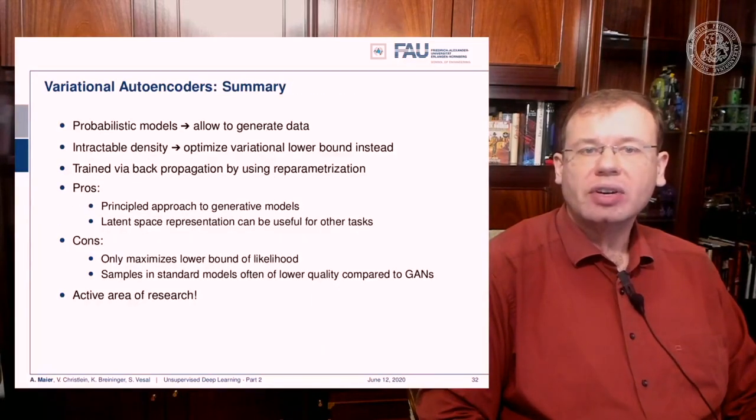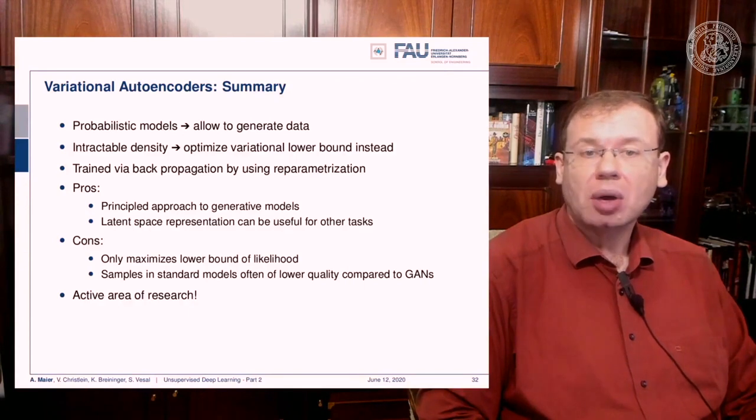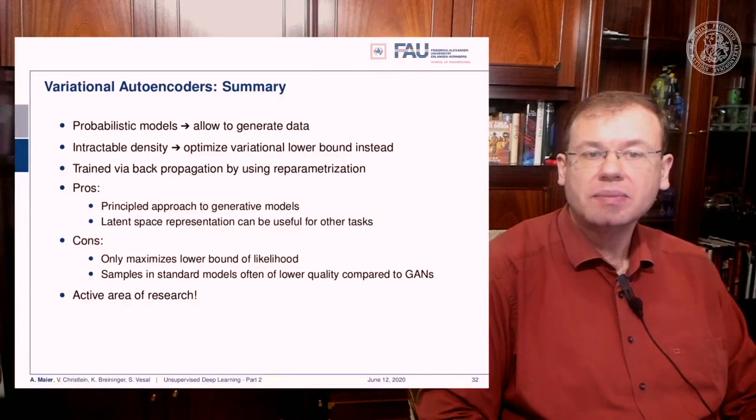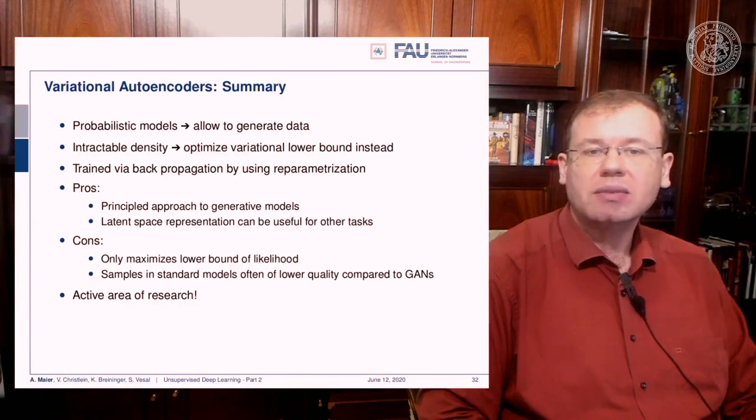So let's summarize the variational autoencoders. It's a probabilistic model that allows you to generate data from the intractable density. We are able to optimize a variational lower bound instead, and this is trained by back-propagation using reparameterization. The pros are that we have a principled approach to generative models here. The latent space representation can be very useful for other tasks. But the cons are that this only maximizes a lower bound of likelihood, so the samples in standard models are often of lower quality compared to generative adversarial networks, and this is still an active area of research.